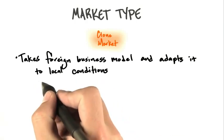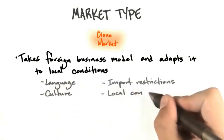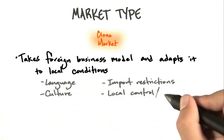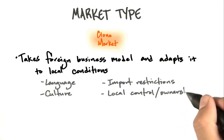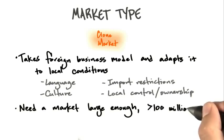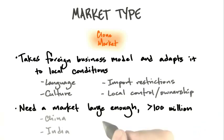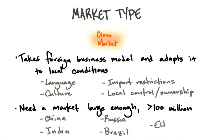What's a local condition? Well, if your language is different than English, or your culture is different than the U.S., or if your country has import restrictions or local control and ownership, and you have a market large enough to support a business model — typically countries with north of 100 million people — that might be China, India, Russia, Brazil, even the EU itself. Just cloning U.S. business models that exist is not a bad business strategy.